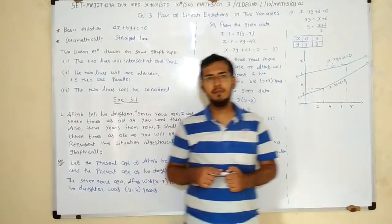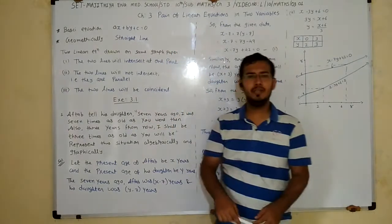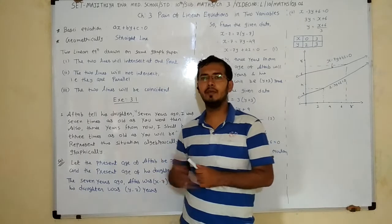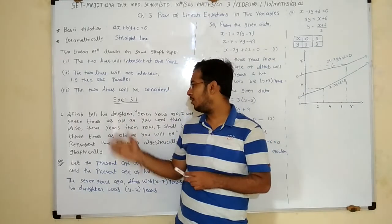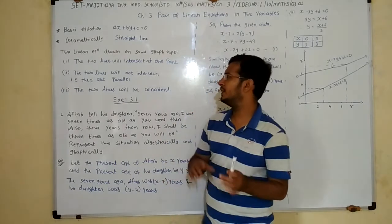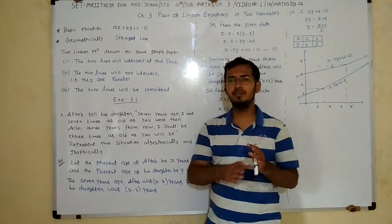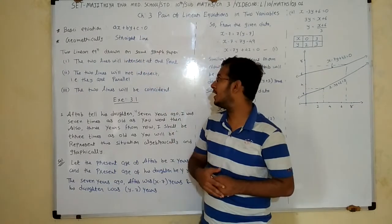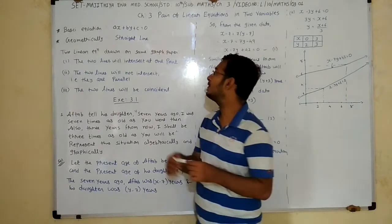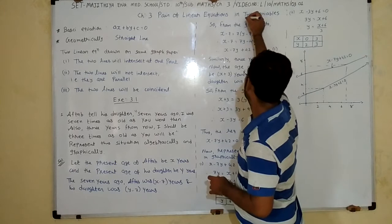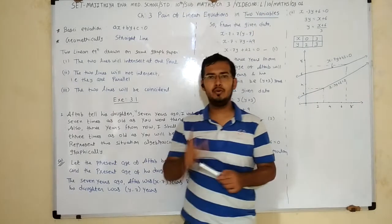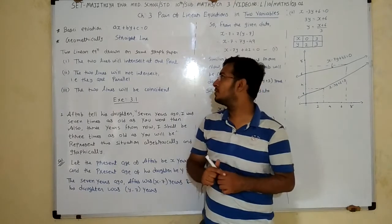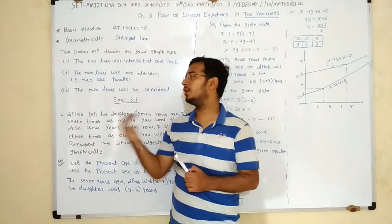Today we start chapter number 3, that is pair of linear equations in 2 variables. This chapter is from the 9th standard, so we have already learnt how to solve equations using data and how to make equations. The basic equation for 2 variables is ax plus by plus c is equal to 0, where a and b are constants and x and y are variables. In this equation, a and b are non-zero; if they are 0, it is not a 2-variable equation.